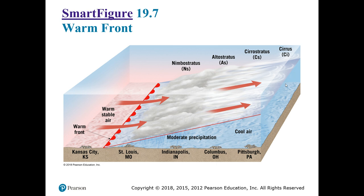Here we have a visualization of what happens as a warm front approaches. The red semi-circles face the direction the warm air is moving. Warm air moves in on colder air but, because it's less dense, it's forced to rise. As warm air rises it cools down to its point of condensation — the lifted condensation level. Clouds begin to form, and as it keeps lifting it forms precipitation, wringing out the moisture in that warm air.